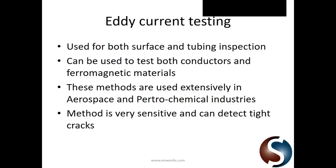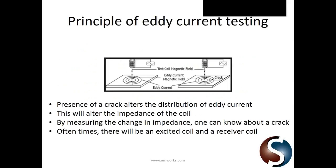Eddy current testing is extensively used in aerospace and the petro industry, and the method is proven very sensitive — even minute cracks can be detected. The principle: a coil excited using AC current produces an alternating magnetic field. This rapidly varying magnetic field generates eddy currents in the plate by Faraday's law.